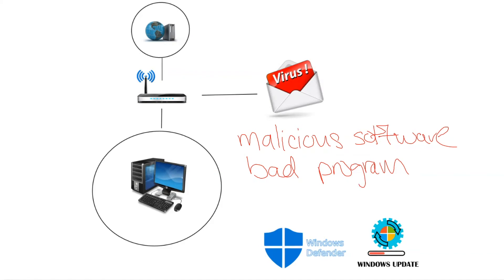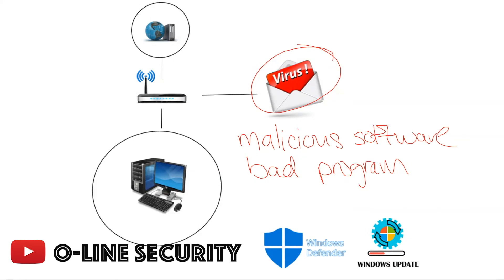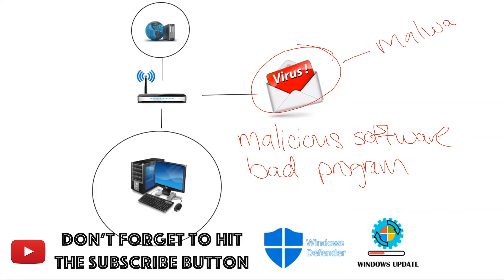We have good programs and we have bad programs. A good program would be something like Microsoft Word — we use that to type papers, do reports, etc. A bad program is something like a virus. A virus is a type of malware and it's one of the most common types.